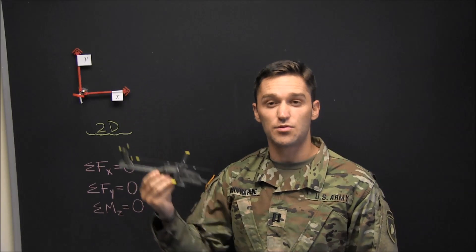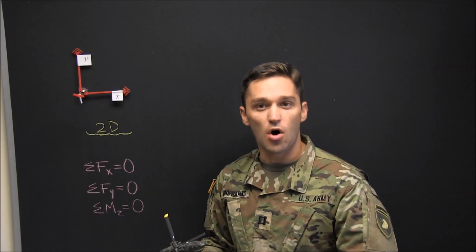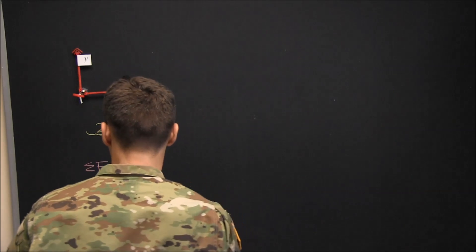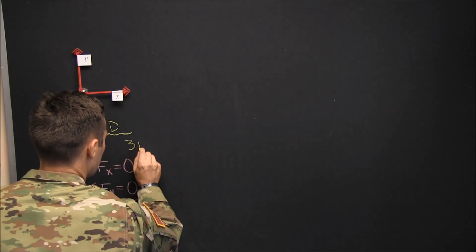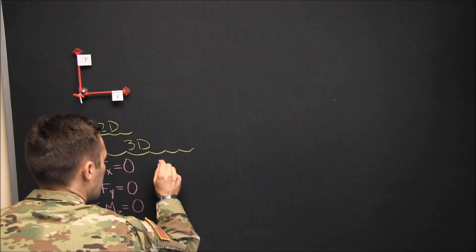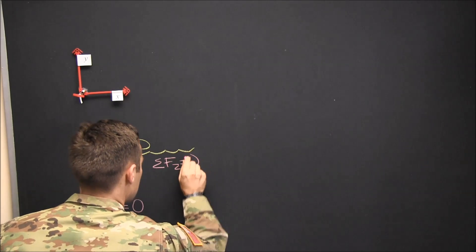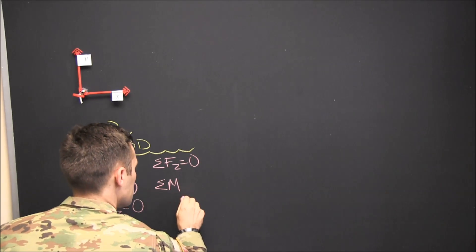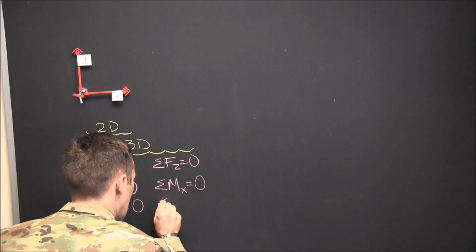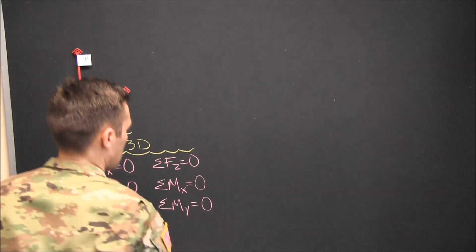Those three extra degrees of freedom also give us three more equations of equilibrium for this static body. In 3D, we can sum forces in the z direction, we can sum the moments about the x axis — that's the rolling — and we can sum the moments about the y axis, that's the yaw.